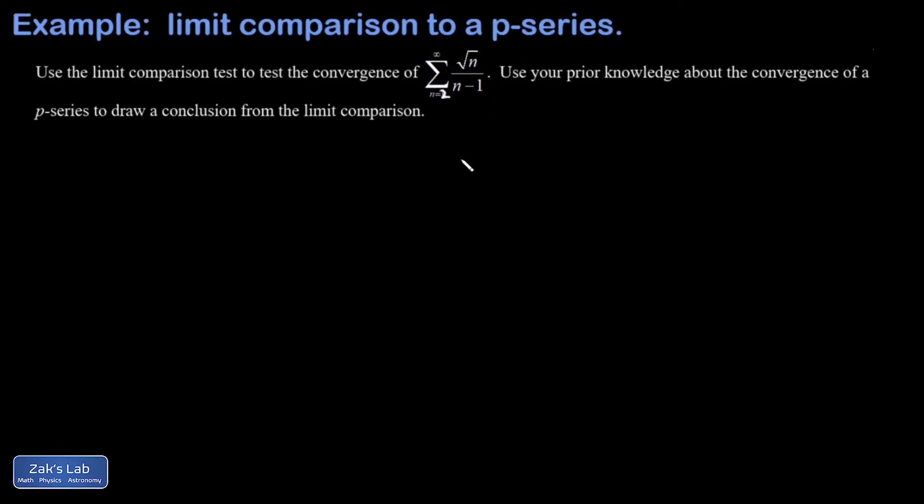In this video we're testing the convergence of the series square root n over n minus one. Note something unusual about this series is that I have to start at n equals two, otherwise the denominator vanishes in the first term. Of course, the starting point doesn't influence the convergence behavior in the long run.